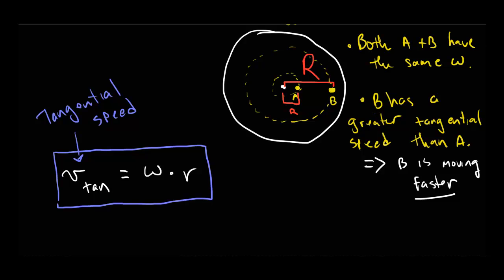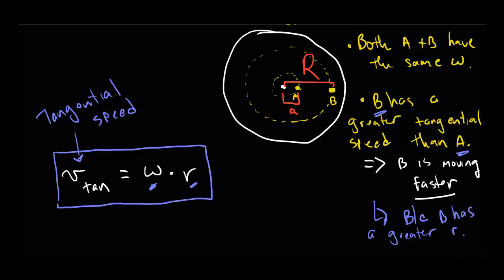Person B has a greater tangential speed than person A because of the greater radius. They have the same omega, but the radius for person B is larger, so person B is moving faster.